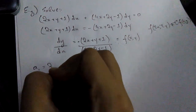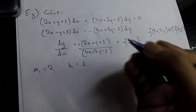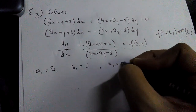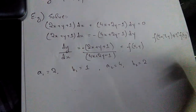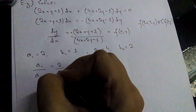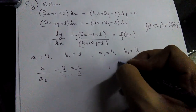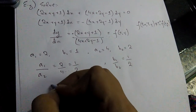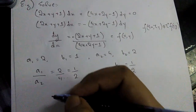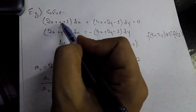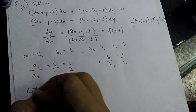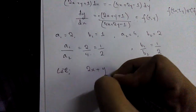Now, A1/A2 = 2/4 = 1/2, and B1/B2 = 1/2 as well. These two ratios are equal, so this is the Case 2 format. Therefore, we let z = 2x + y — substituting the A1x + B1y part with z.